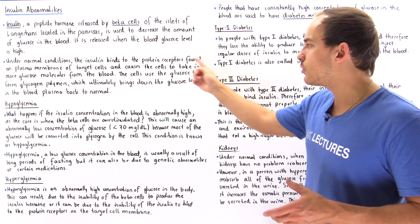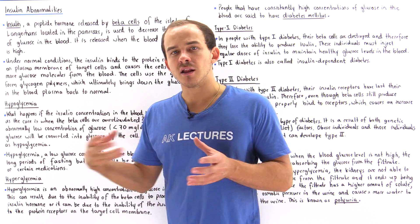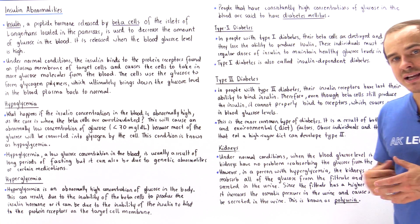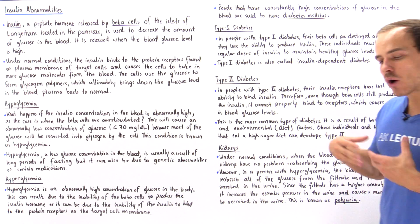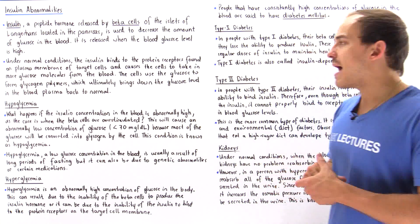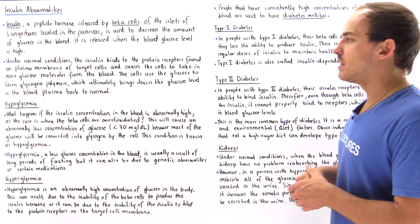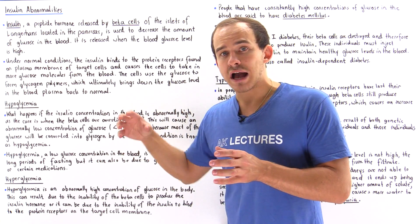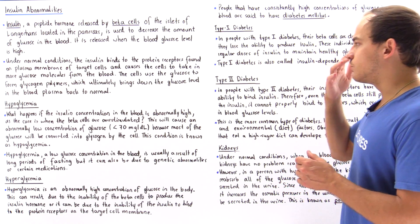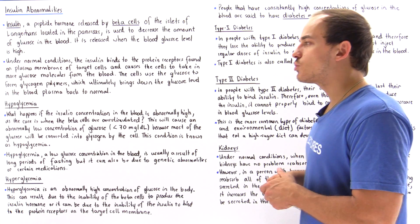Inside the cell, glucose is transformed into glycogen, which is a polymer of glucose. By this mechanism, insulin controls and decreases the amount of glucose found inside the blood plasma, because more glucose travels into the cell and the concentration of glucose in the blood decreases.